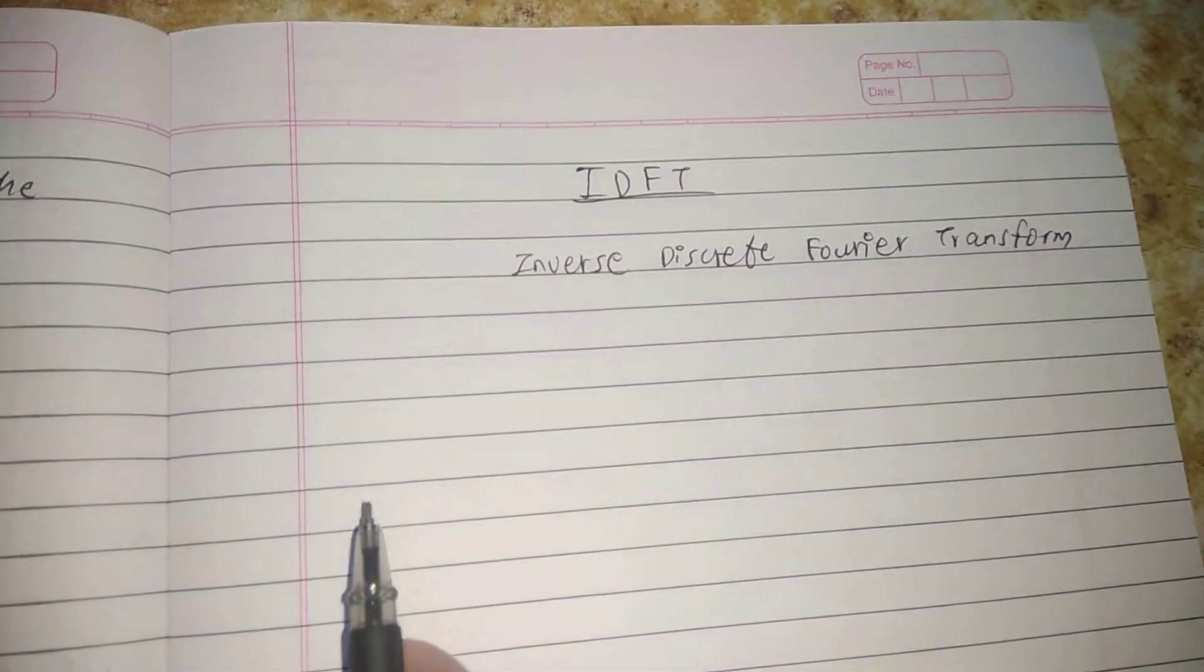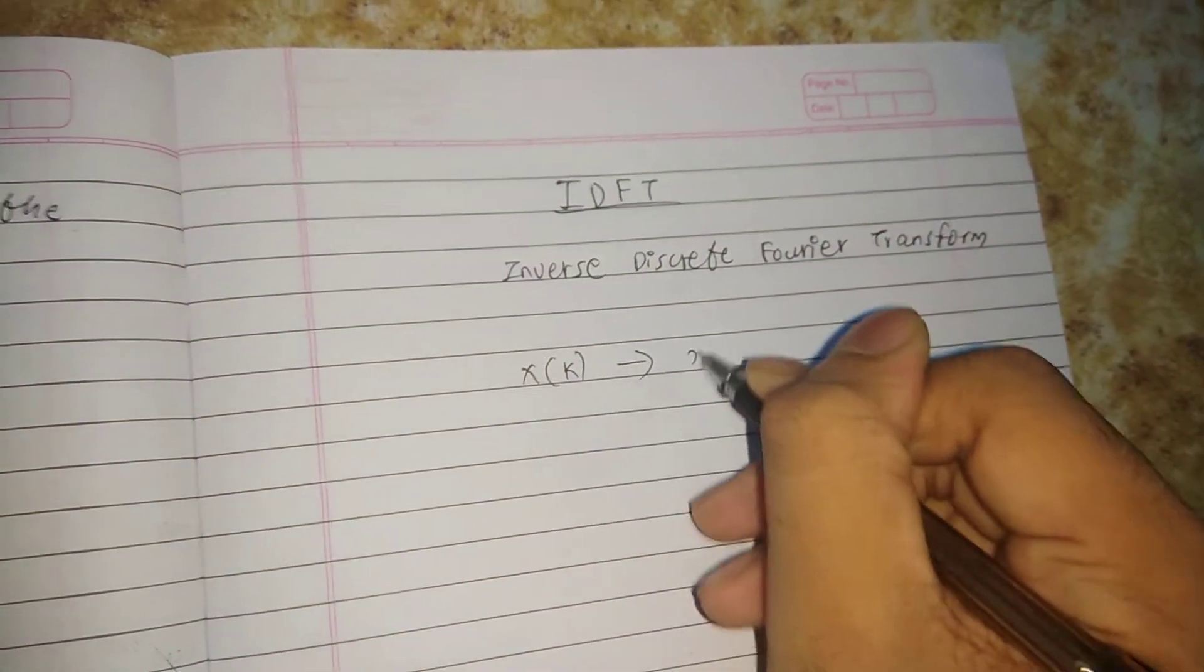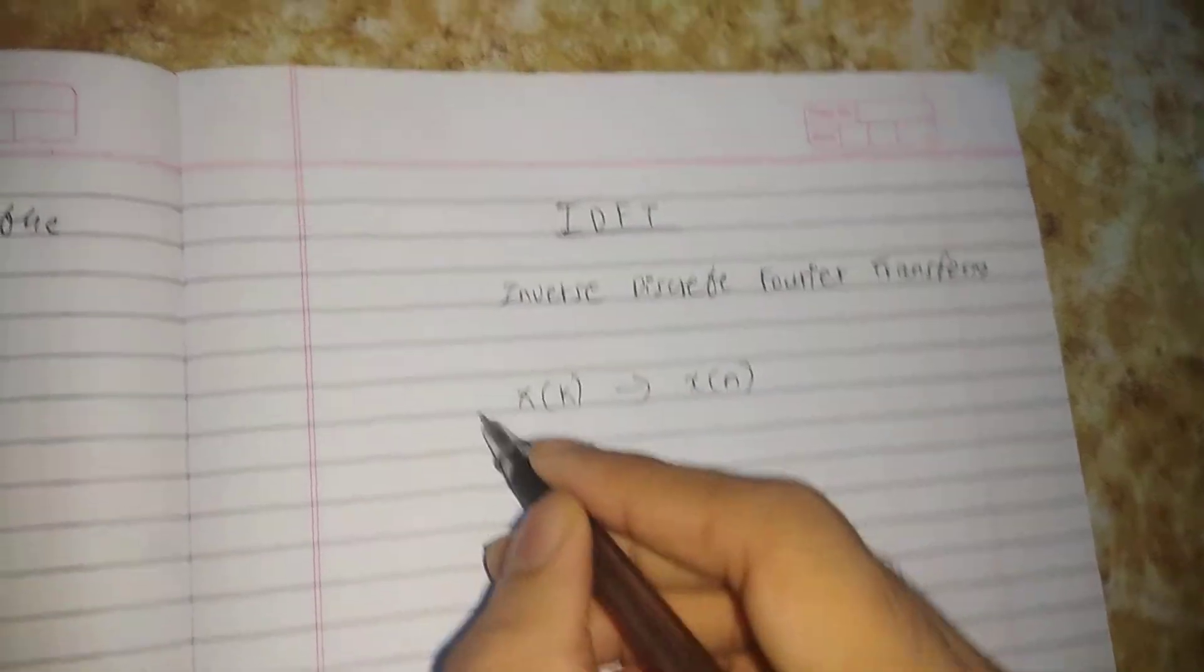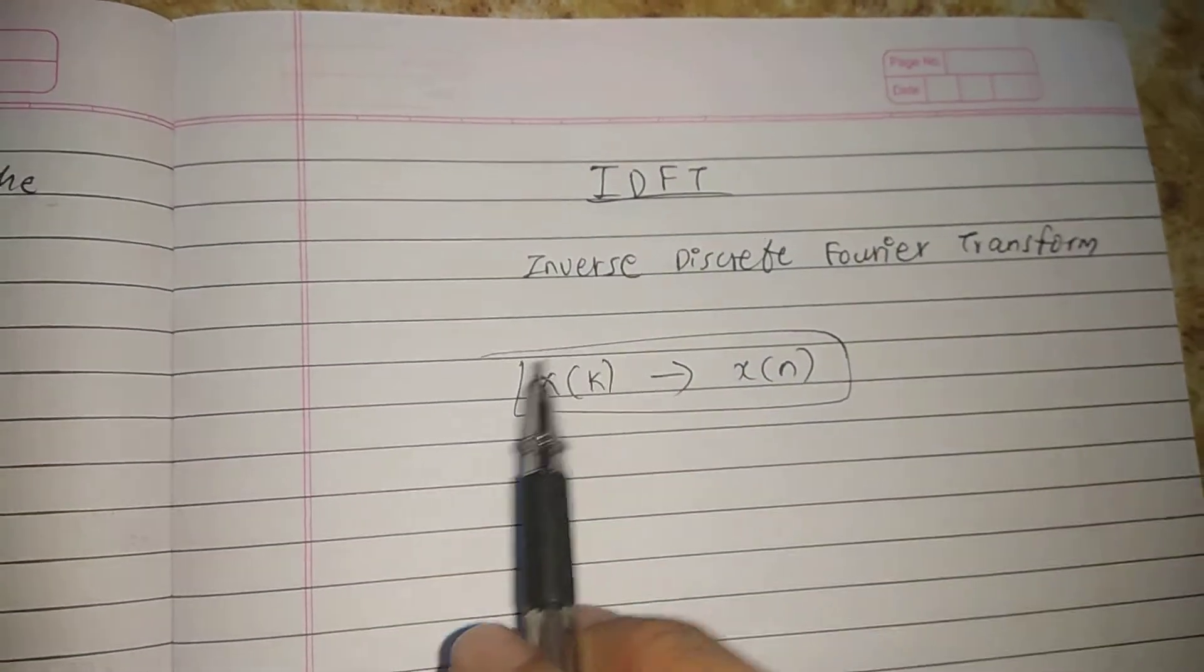The inverse discrete Fourier transform takes x, which is in the frequency domain, and converts it into the time domain. This is what IDFT does if you are given frequency domain components.